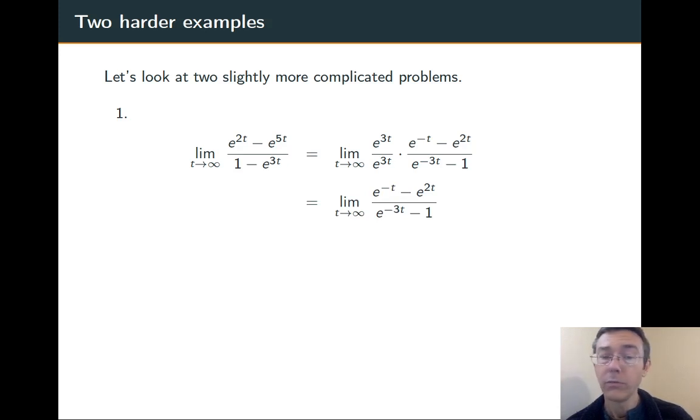Now, as t goes to infinity, the exponentials with negative exponents go towards 0. So I'm just left with -e^(2t)/(-1). That goes to negative infinity over negative 1, also known as positive infinity.